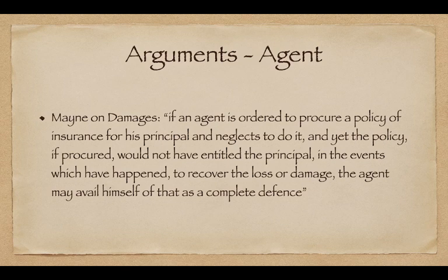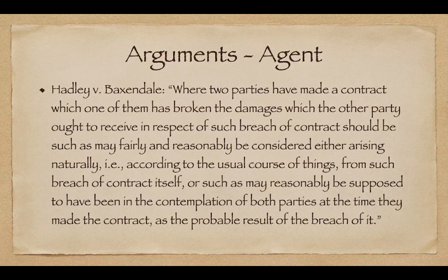The agent also argued using the treatise Mayne on Damages — one of those fantastic, fabulous books that are the pillars of the common law system. The book states: 'If an agent is ordered to procure a policy of insurance for his principal and neglects to do it, and yet the policy if procured would not have entitled the principal in the events which have happened to recover the loss or damage, the agent may avail himself of that as a complete defence.' This precisely describes the situation here — that even if the goods had been insured against fire, such a fire insurance policy would not have resulted in payment of the value of the goods, in which case the agent, despite neglecting to procure the insurance policy, would not be held liable. The problem for the agent, of course, was that the ordinance did not consider any of these things.